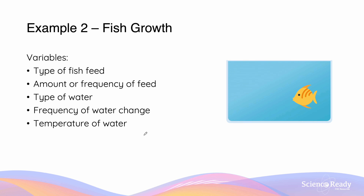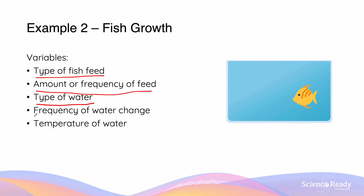Here we'll look at a second example: fish growth. We can ask ourselves, what are the different variables which affect fish growth? Variables include the type of fish feed which is used, the amount or frequency of feeding, the type of water which the fish is grown in, the frequency of the water change, and the temperature of the water inside the tank.